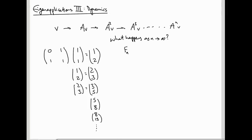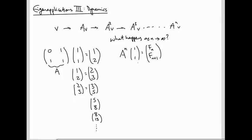Let me write down a formula. So if this is the matrix A, A to the n of [1,1] is the nth Fibonacci number and the (n+1)th Fibonacci number in a vector, where I'm numbering my Fibonacci numbers in such a way that F1 is 1, F2 is 2, F3 is 3, etc. So F0 will also be 1.